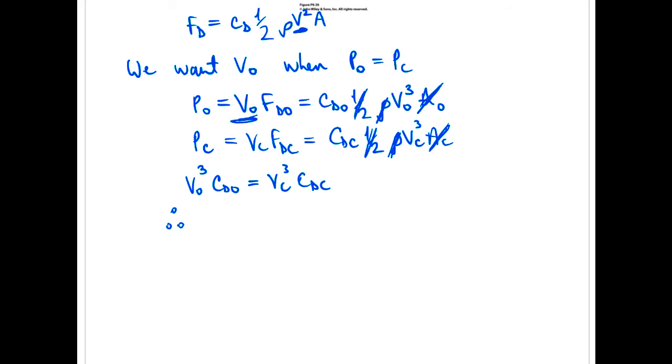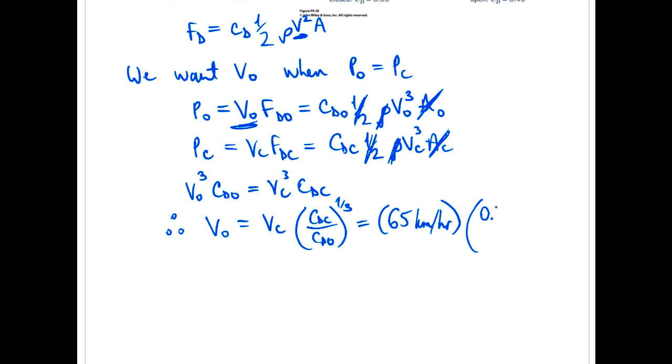Rearrange, therefore the velocity when it's open, which is what we need to solve for, equals the velocity when it's closed times Cdc over Cd open, drag coefficient closed versus open, to the one third power. And so we just go ahead and plug in. Keep your units here because we're going to work in slightly unconventional units: 65 kilometers per hour, then we were given 0.35 and 0.45 to the one third.